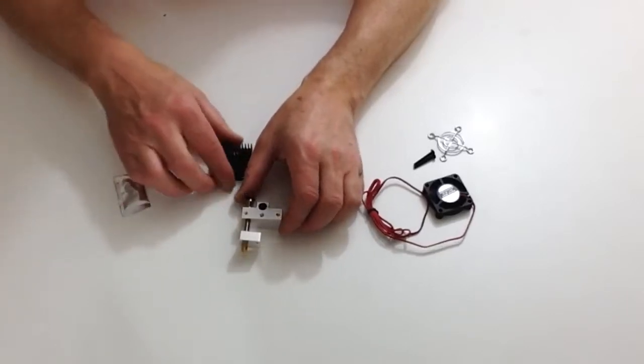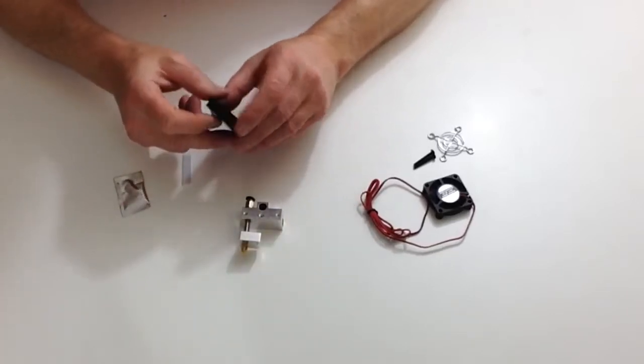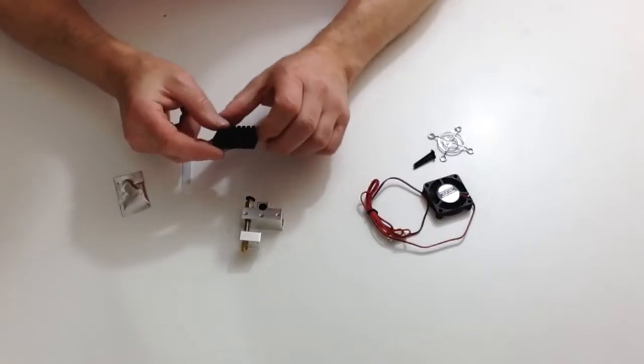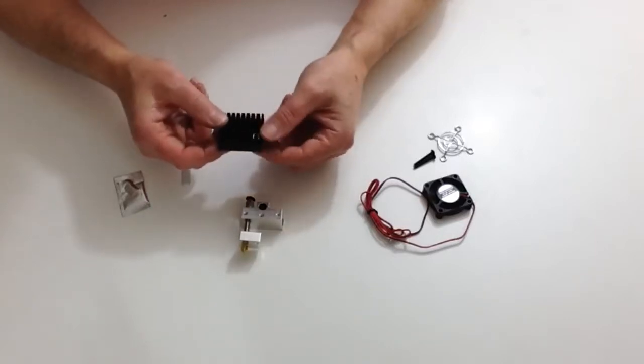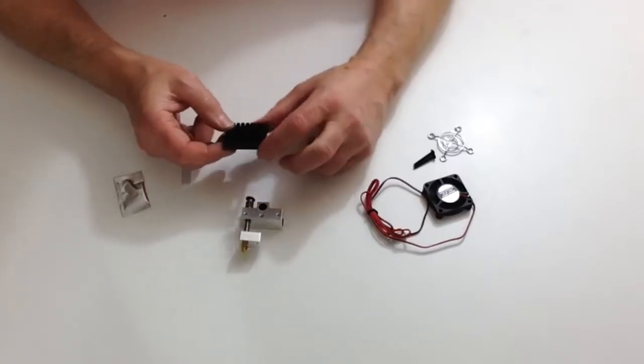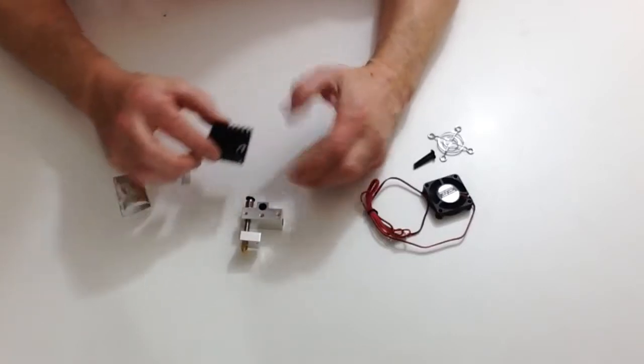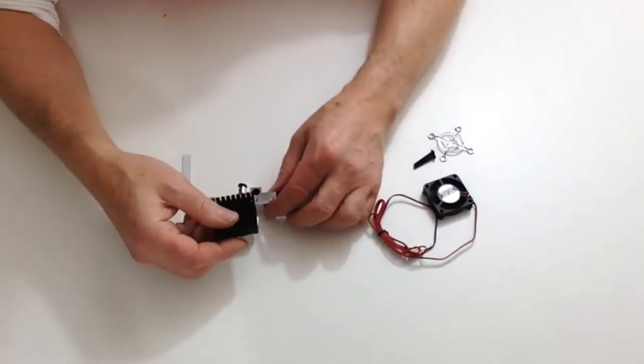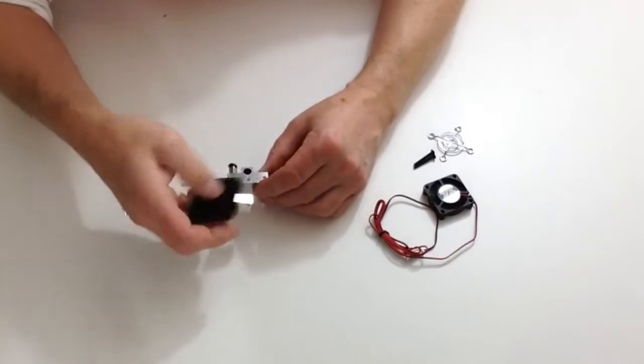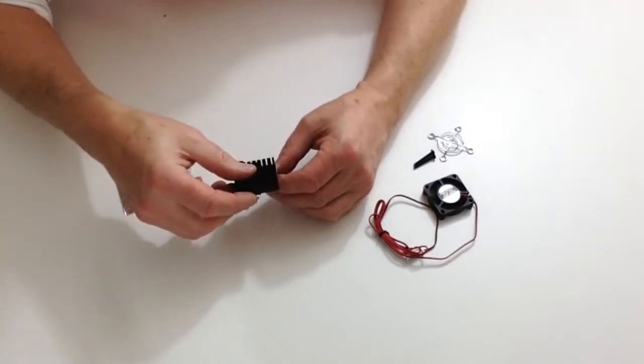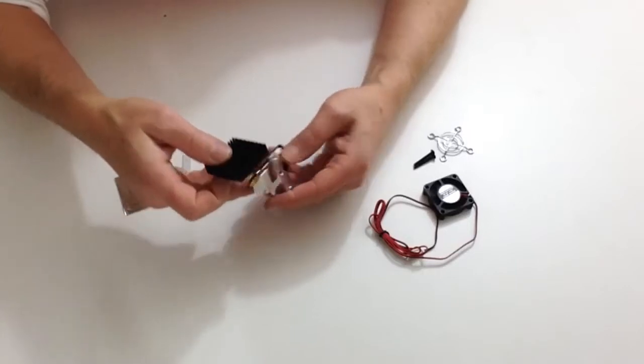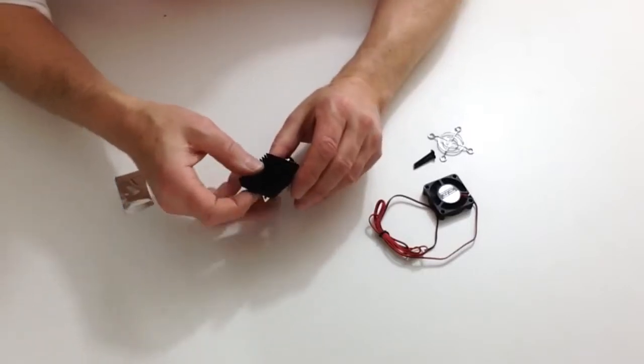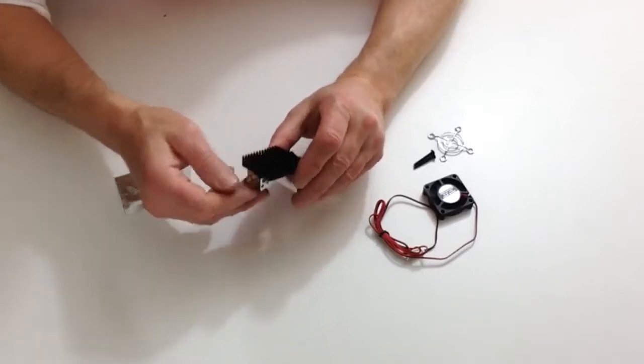Once we have done that and we have put the grease on, we then get the heat sink. The heat sink will have two holes and one large oval hole. With those two holes we will need to line up with the thermal block and then insert the two screws.